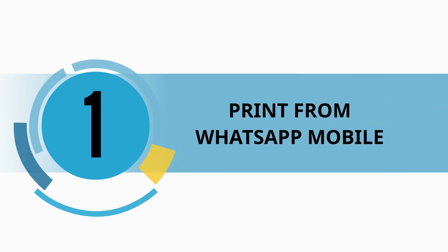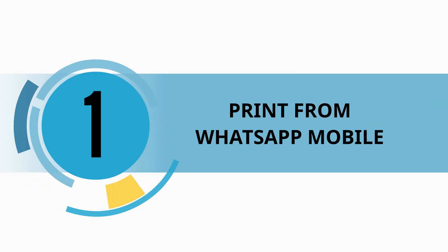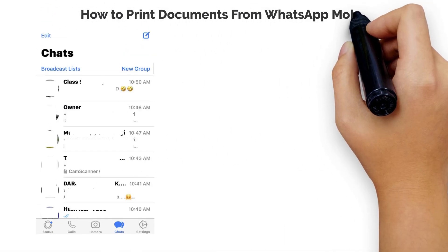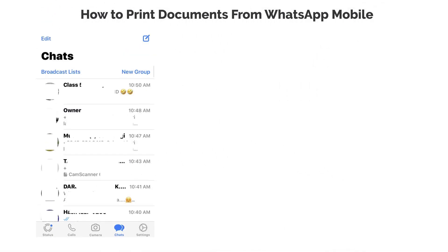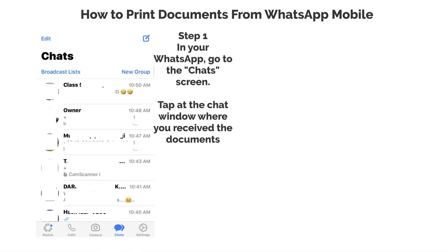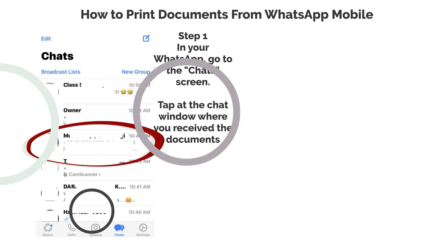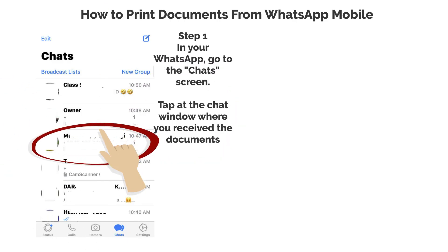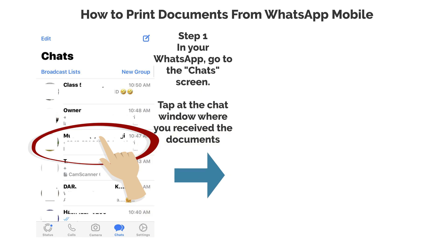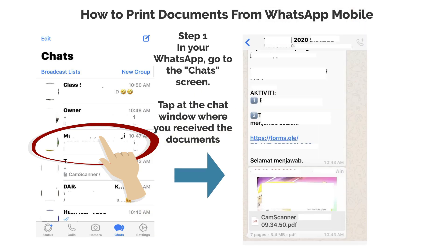Print from WhatsApp Mobile. Step 1: In your WhatsApp, go to the chats screen. Tap at the chat window where you received the document.